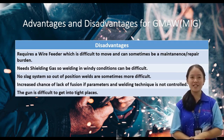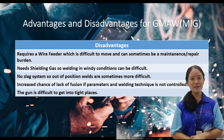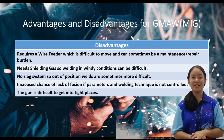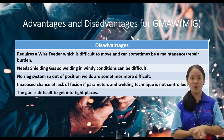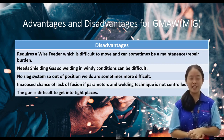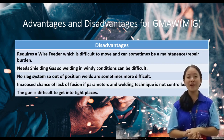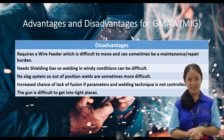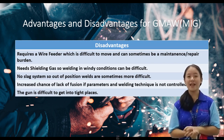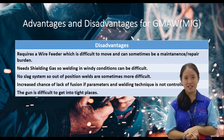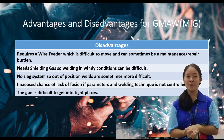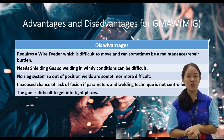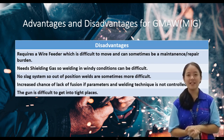The disadvantages of gas metal arc welding: first, it requires a welding burden which is difficult to manage and can sometimes be a maintenance or repair burden. Second, it needs shielding gas, so welding in windy conditions can be difficult. Third, no slag system, so out-of-position welds can sometimes be more difficult. Fourth, increased chance of lack of fusion if parameters and welding technique are not controlled. Last but not least, the gun is difficult to get into tight places.